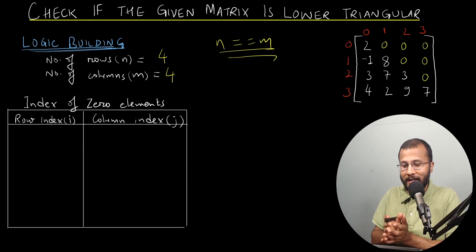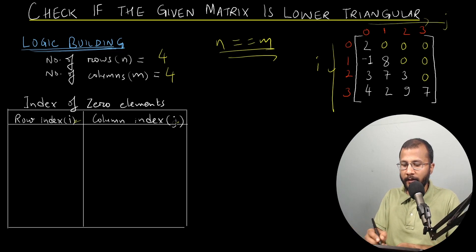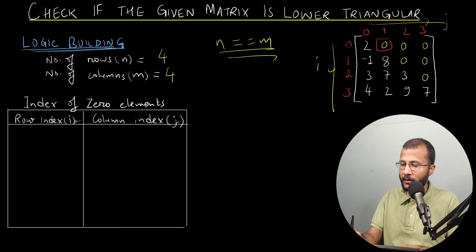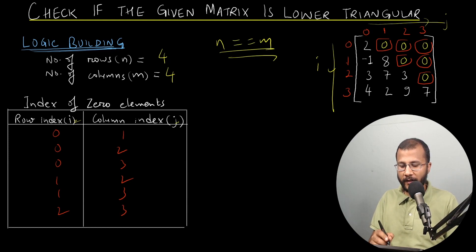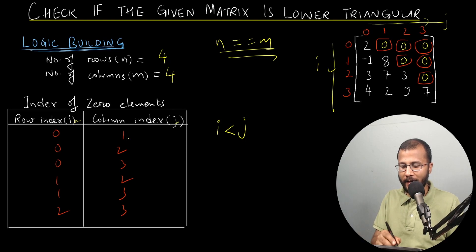Now, how do we check the zero elements? Let's note down the indexes of all the zero elements. Let's call the row index i and the column index j. Looking at the table: the first zero element has row index 0, column index 1; next is row 0, column 2; then row 0, column 3; row 1, column 2; row 1, column 3; and finally row 2, column 3. If you observe closely, i is always less than j — 0 < 1, 0 < 2, 0 < 3, and so on.